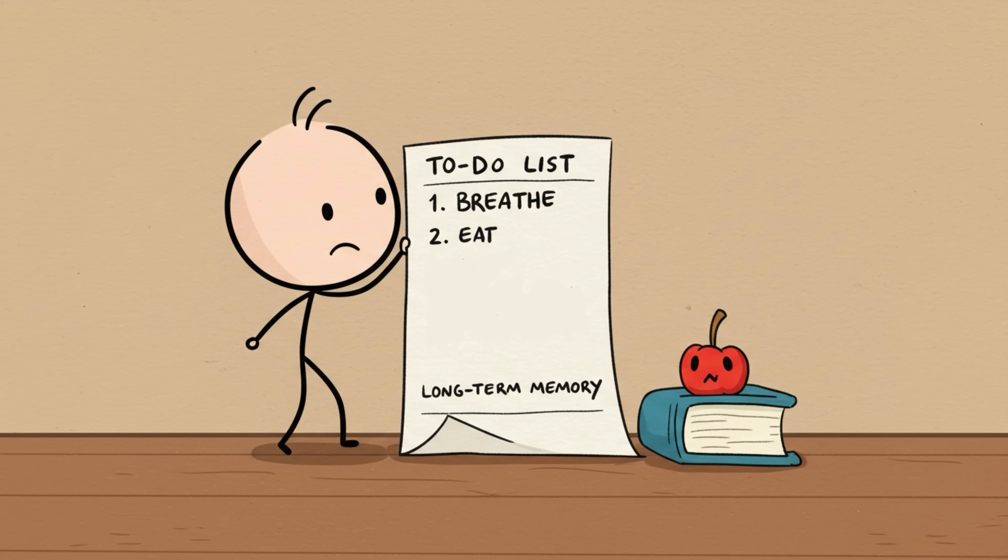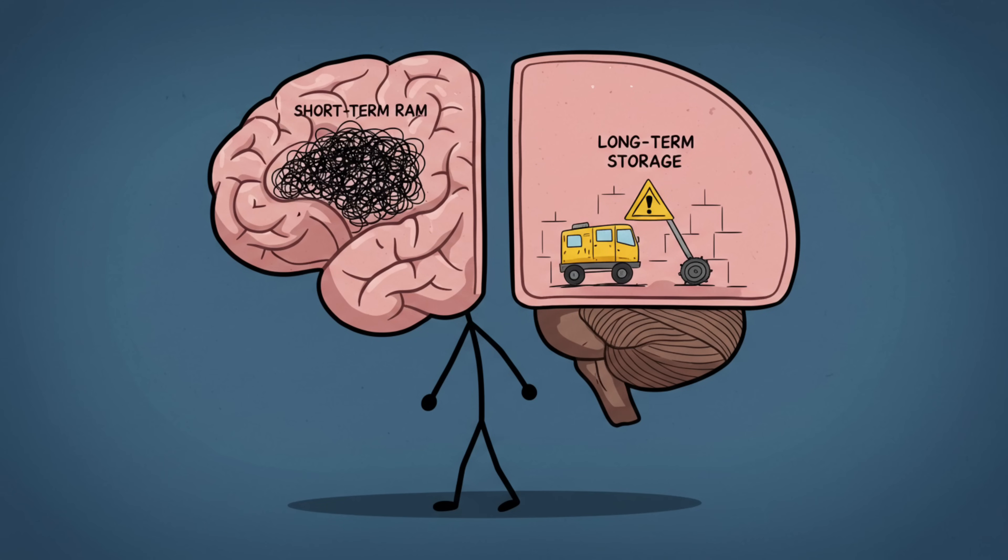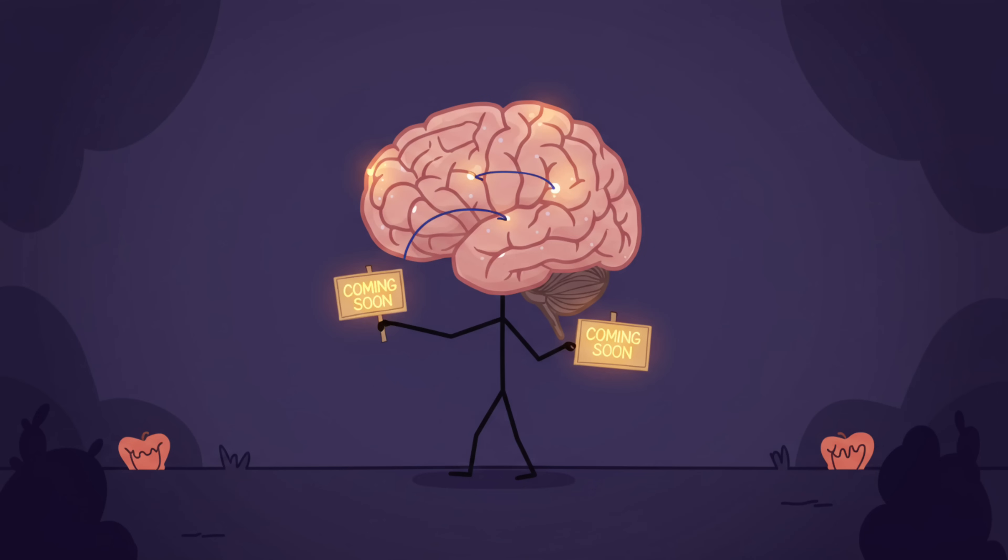This insane developmental pace leaves little bandwidth for meticulously saving each moment. Long-term memory isn't the priority when your brain's main goal is survival, like learning to breathe, eat, and not roll off the couch. Memory consolidation, the process of moving information from short-term into long-term storage, was still under construction, with coming-soon signs all over your neural pathways.